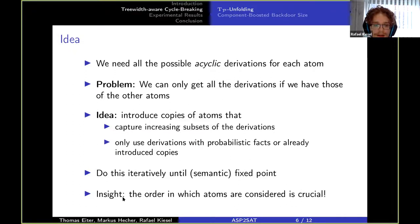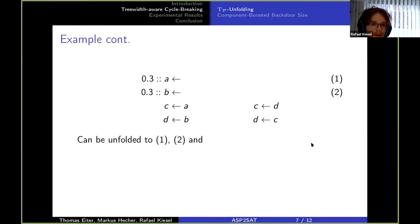And then we do this iteratively until we reach a semantic fixed point and then we have an equivalent program without cycles. Now what's a very important insight here is that the order in which atoms are copied is very crucial. Let's look at this idea with the same example again and we see that these probabilistic effects we can just keep them as they are.